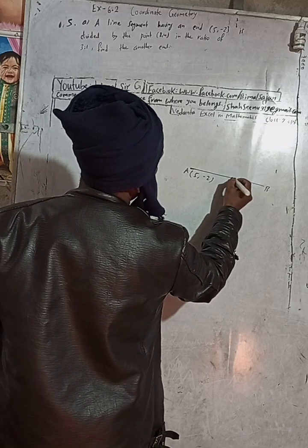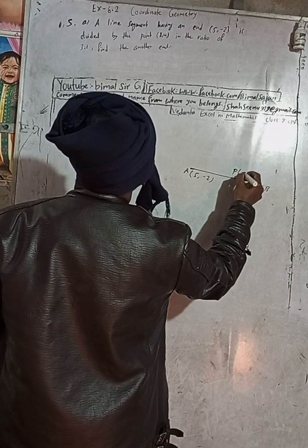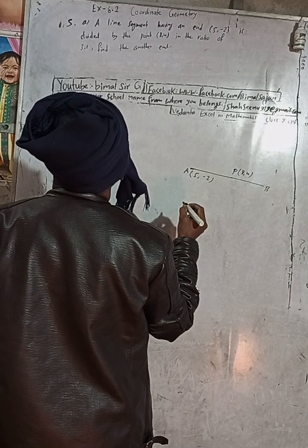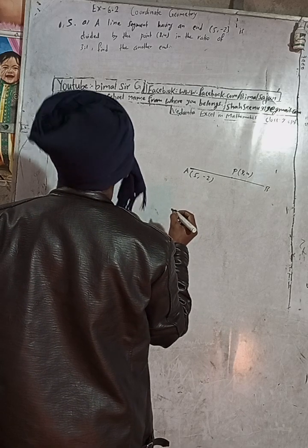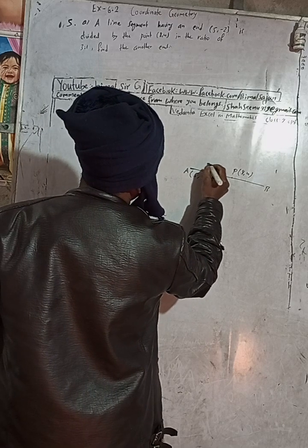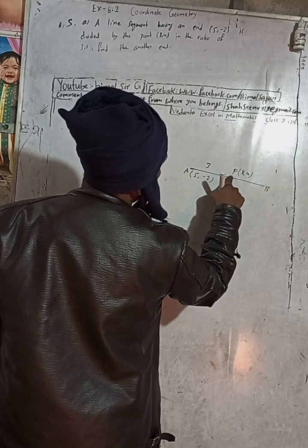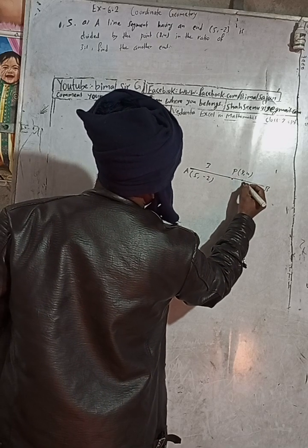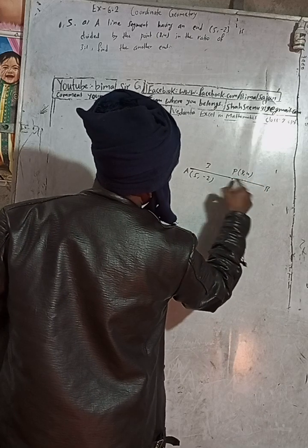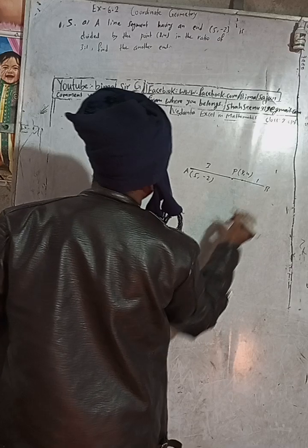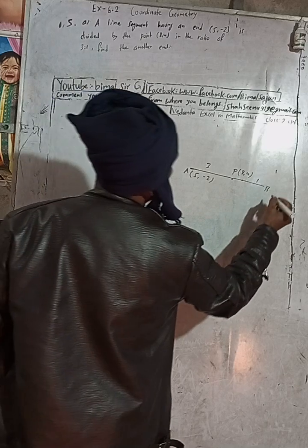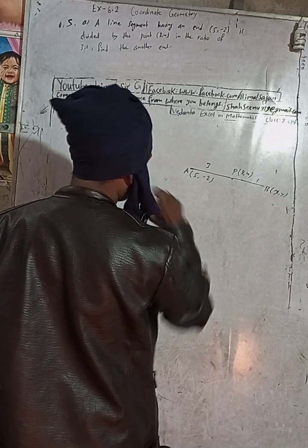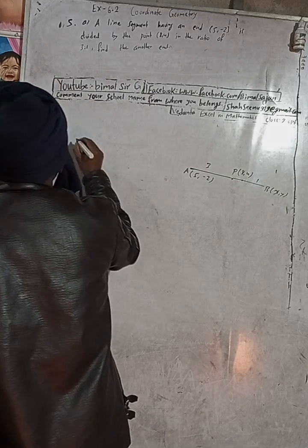This point is divided by (8, 4). Suppose this is our point P, which is (8, 4). It divides in the ratio 3 to 1. So this part is 3 and this part is 1. P is here at 3 to 1, and we need to find the other end point.